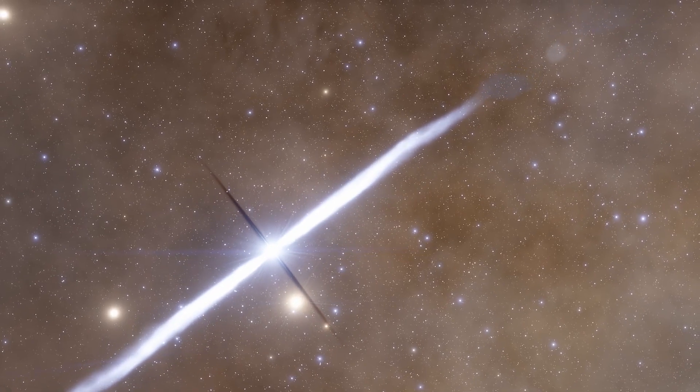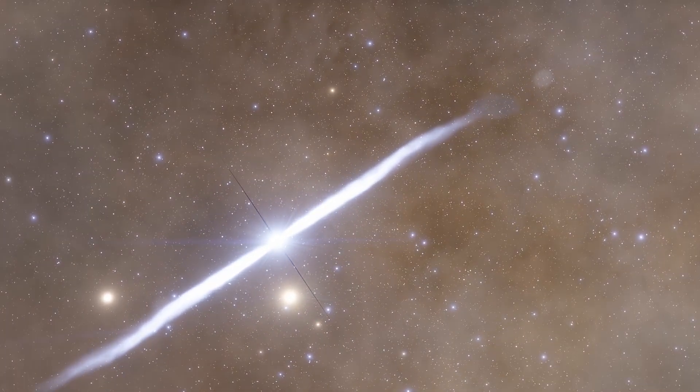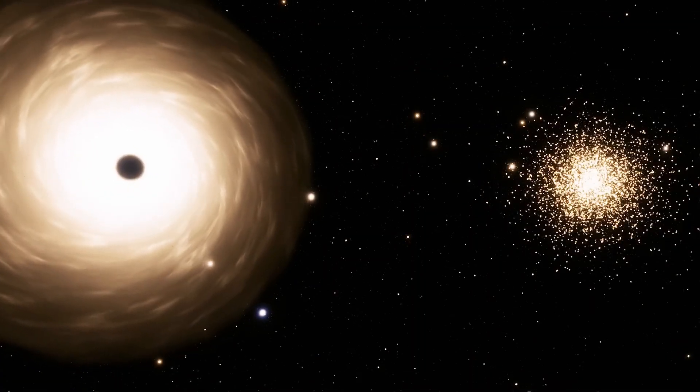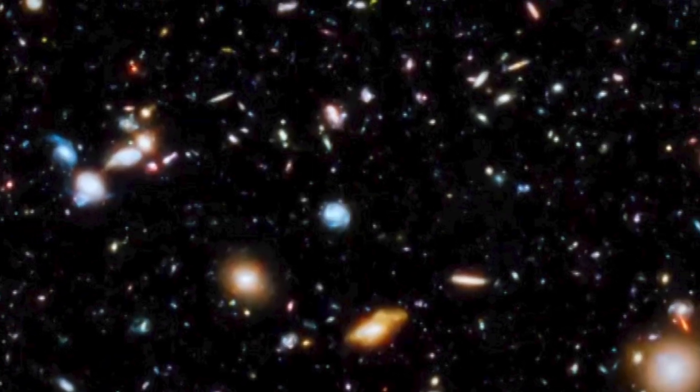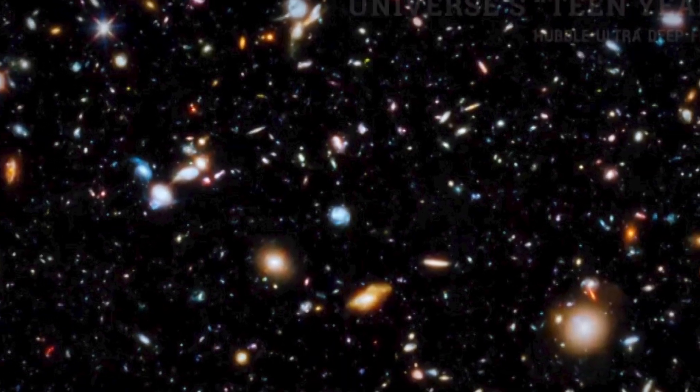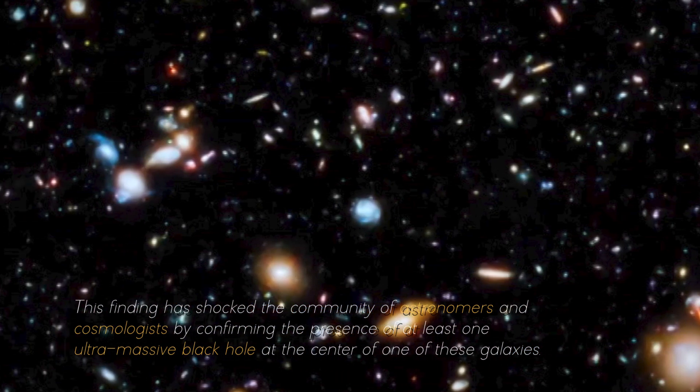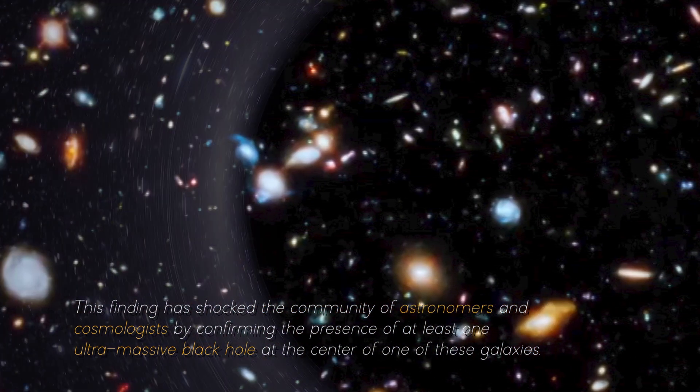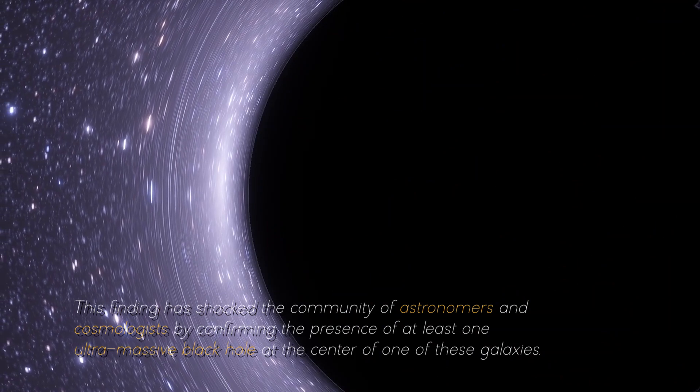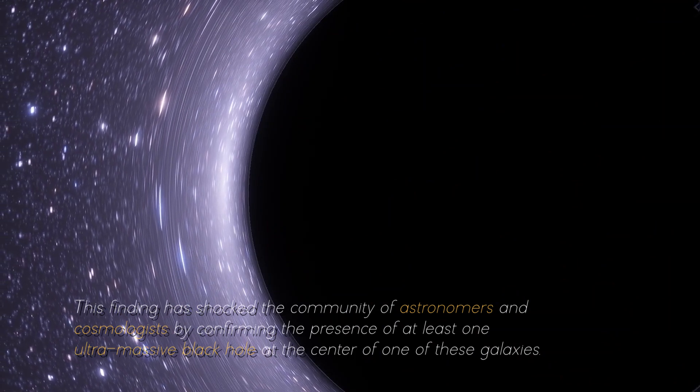Kaku is one of the pioneers in explaining clearly what the James Webb Space Telescope has discovered at the temporal regions of the universe: huge black holes. One image reveals ancient galaxies that theoretically should not exist. This finding has shocked the community of astronomers and cosmologists by confirming the presence of at least one ultra-massive black hole at the center of one of these galaxies.